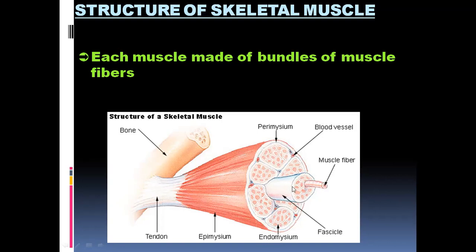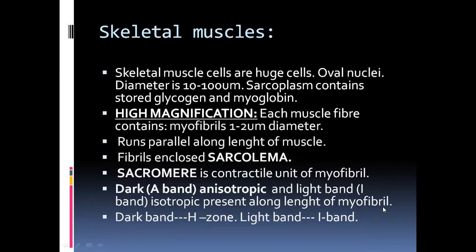Inside the muscle bundle, it is enclosed by a tough tissue known as the epimysium. Inside the muscle bundle we have smaller bundles known as fascicles. These fascicles contain even smaller thread-like structures arranged in parallel, known as muscle fibers — also called muscle cells. Inside the muscle fiber we have the sarcoplasm, enclosed externally by the sarcolemma, which extends into the sarcoplasm forming T-shaped structures called T-tubules.